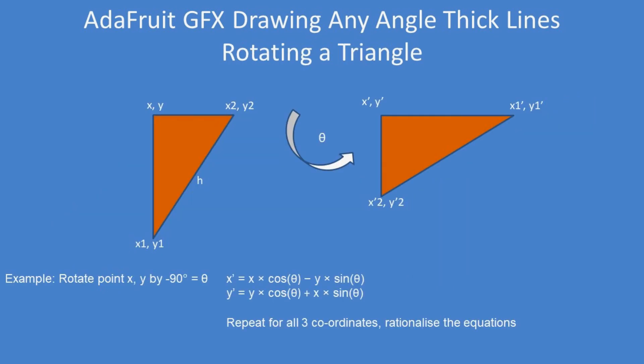So here's the mathematics bit. Two triangles: one triangle on the left with coordinates x, y, x1, y1, x2, y2. Using Pythagoras, we can apply a transform to the coordinates, all three coordinates.